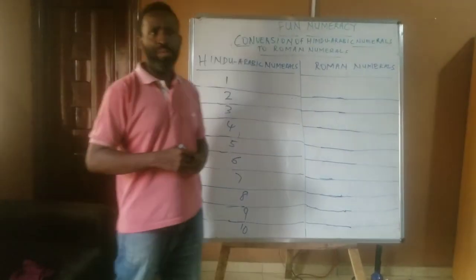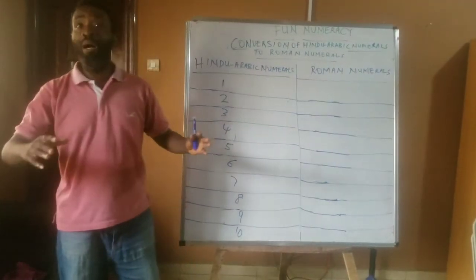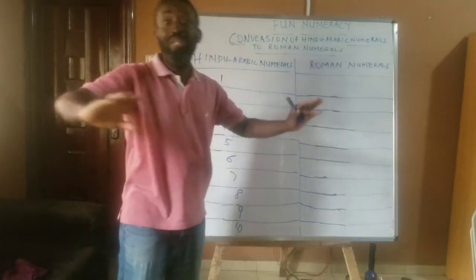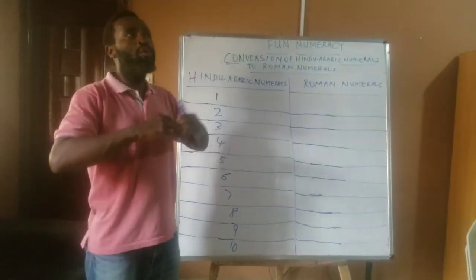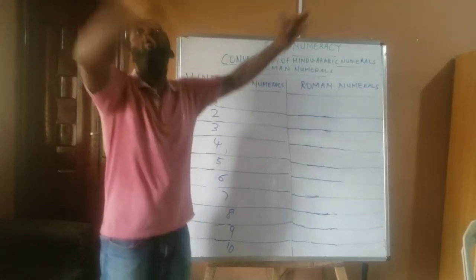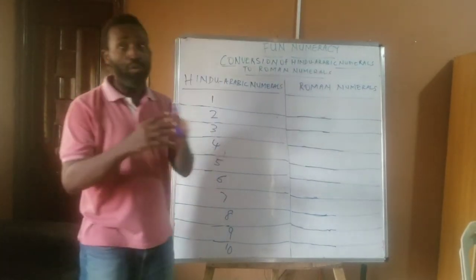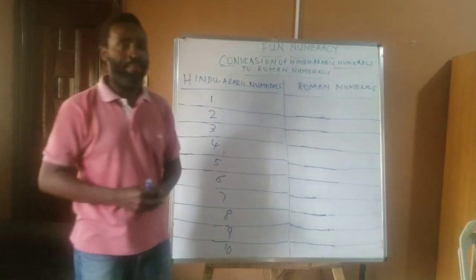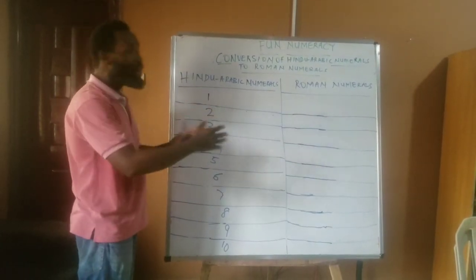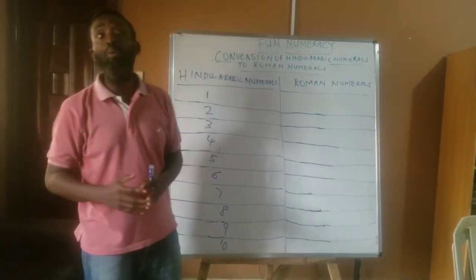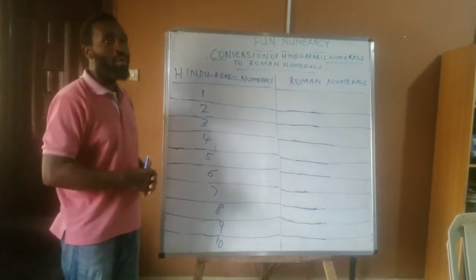What are Roman numerals? They are numbers that were made popular and used everywhere. They were used by people who controlled the ancient empire and controlled the whole world at that point in time. The place is now called Rome and is present in Italy. We are converting these numbers because we will keep using Roman numerals and they are numbers that are known to us.